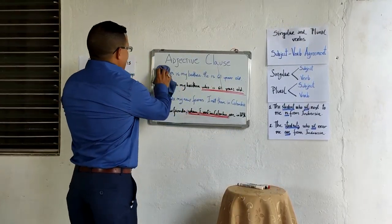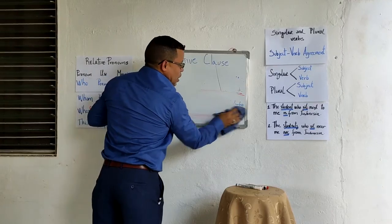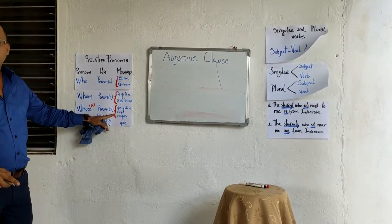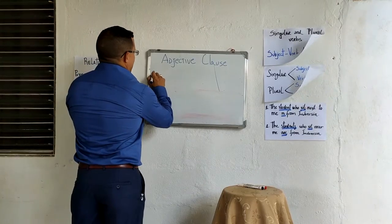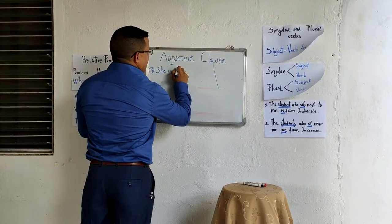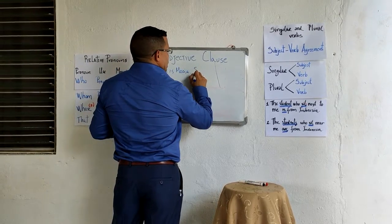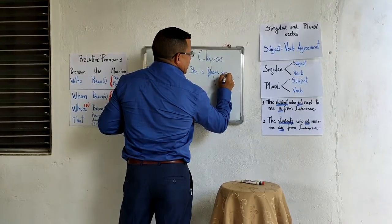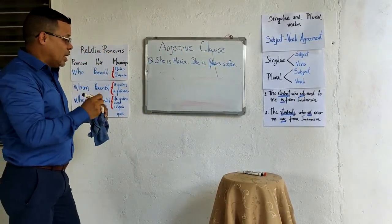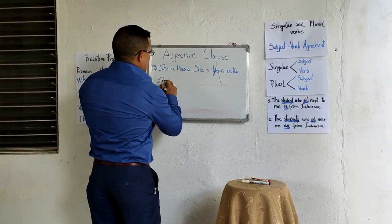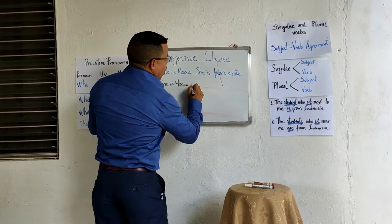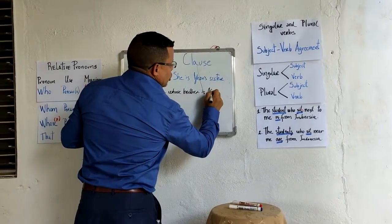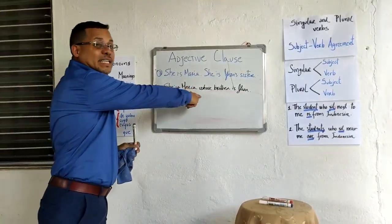Now let me explain another example using 'whose,' which refers to possession. For example: 'She is Maria. She is John's sister.' When I make an adjective clause, I put: 'She is Maria whose brother is John.' I don't use a comma because this is essential information.